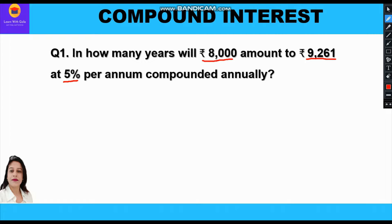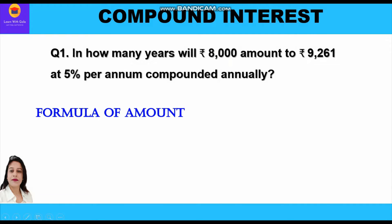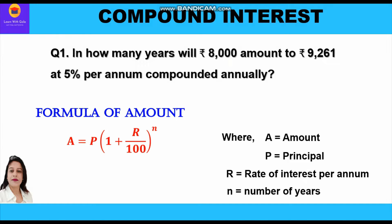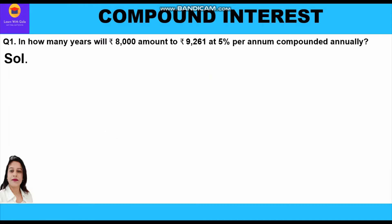Three quantities are already given to us: the principal, amount, and rate of interest, and we have to find the time period. We know that the formula of amount is A = P(1 + r/100)^n. There are four quantities in this; three are given and we have to find the fourth, that is n — the time period. Let's start with the solution.